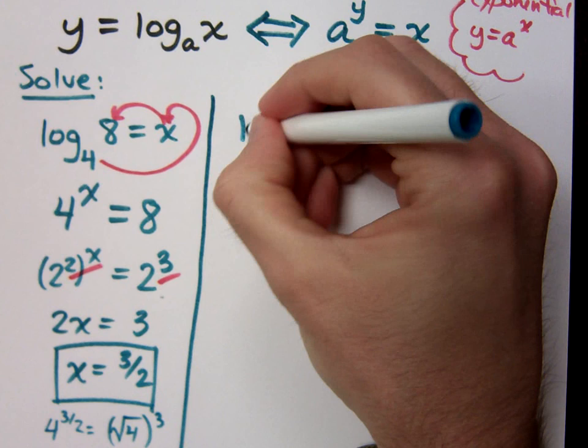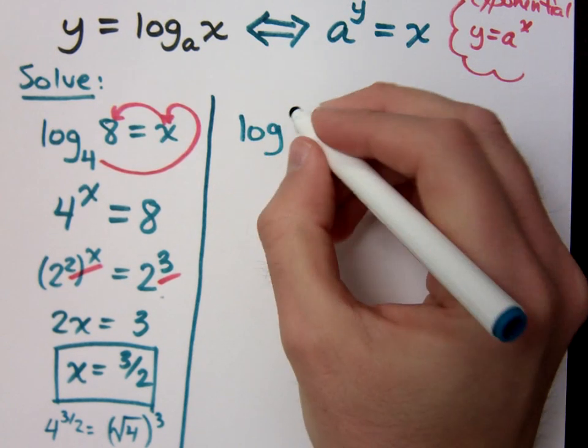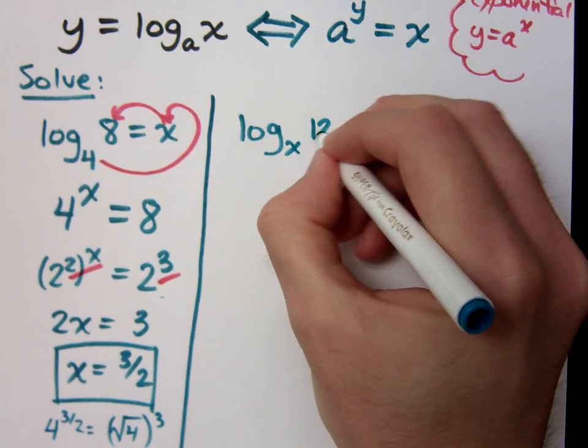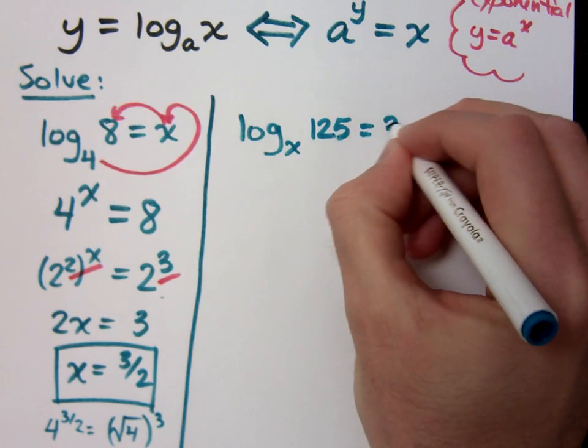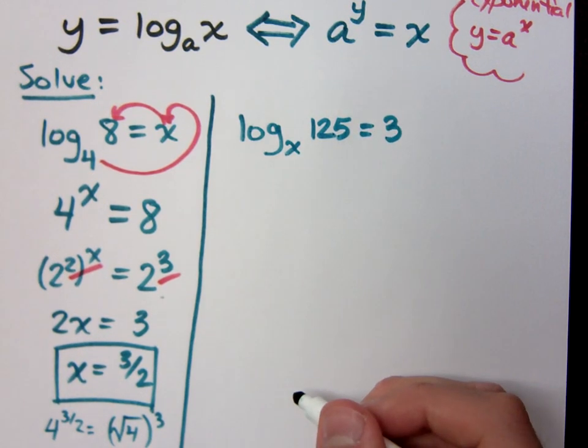Let's try this one then. Log with base x of 125 equals 3. For us to figure out what this is going to be, how we find x, we rewrite using exponential form.